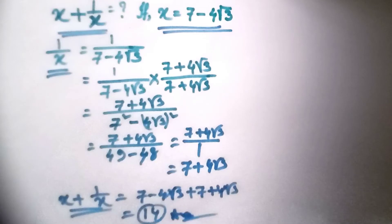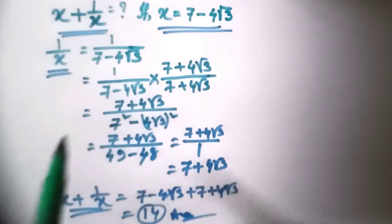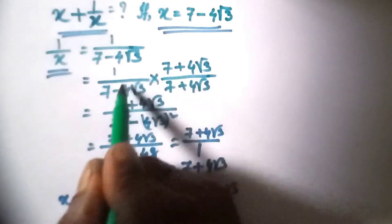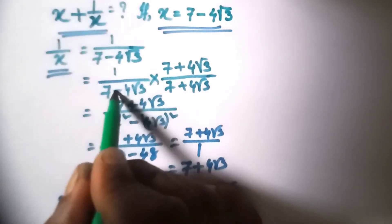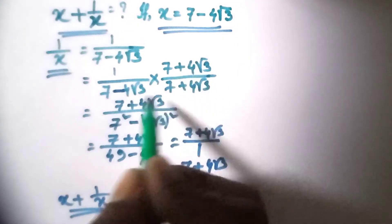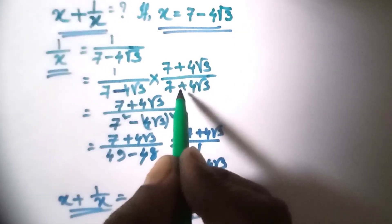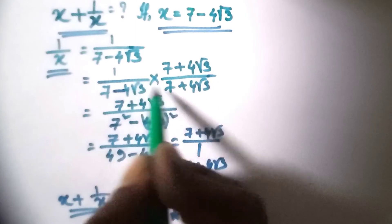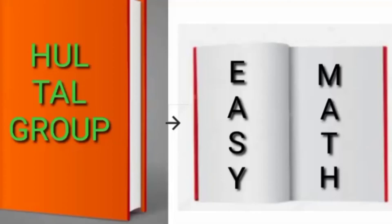So you can understand this process is easy. You need to multiply both sides by the conjugate term. If there is a minus term, multiply by the plus term; if there is a plus term, multiply by the minus term. Thank you for watching the video and subscribe for more videos.